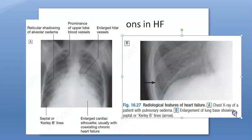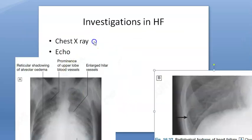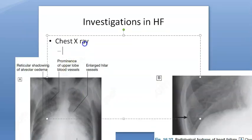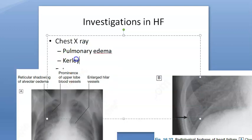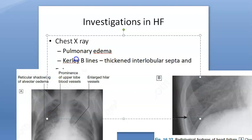The curly B lines are horizontal lines visible in the costophrenic angle. These are caused by thickened interlobular septa — the septa between the lobules is thickened — and dilated lymphatics. So pulmonary edema and curly B lines are key findings.